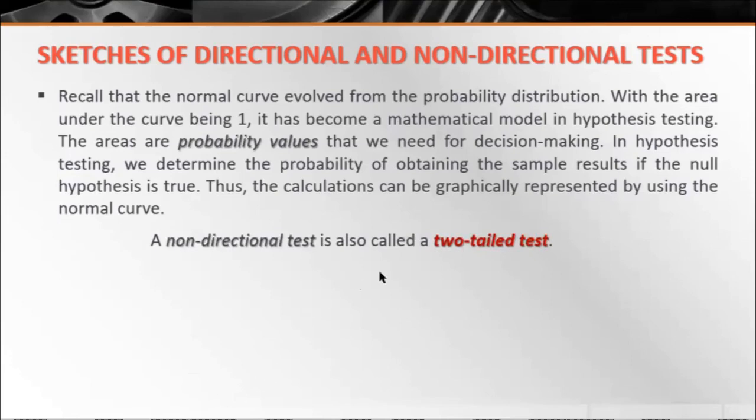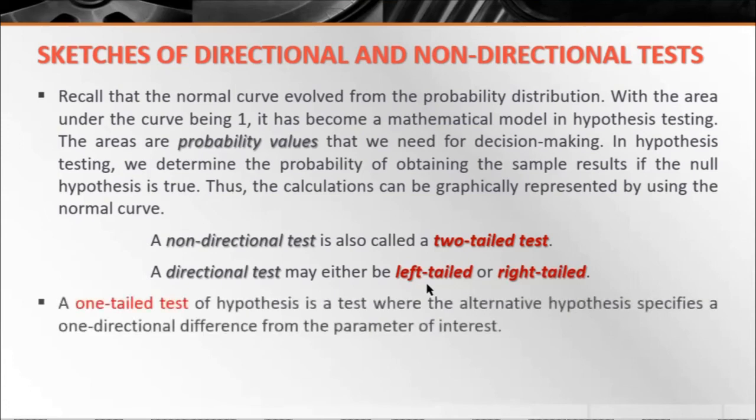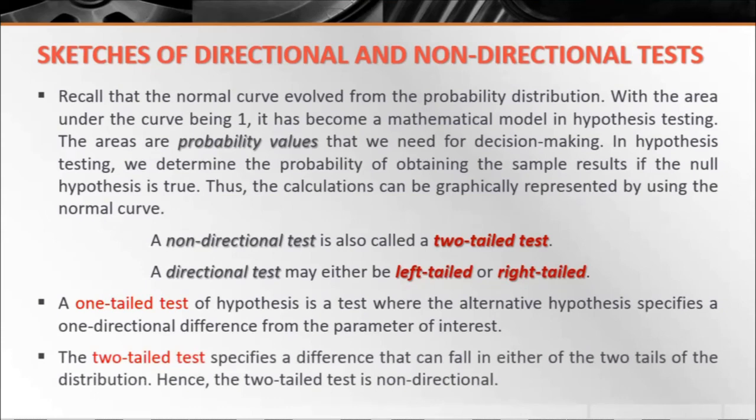A non-directional test is also called a two-tailed test. So if our hypothesis is inclined with non-directional test, we can also call it a two-tailed test. A directional test may either be left-tailed test or right-tailed test, or what we call a one-tailed test. That's the difference between one-tailed and two-tailed. A one-tailed test of hypothesis is a test where the alternative hypothesis specifies a one-directional difference from the parameter of interest. While the two-tailed test specifies a difference that can fall in either of the two tails of the distribution. Hence, the two-tailed test is non-directional.